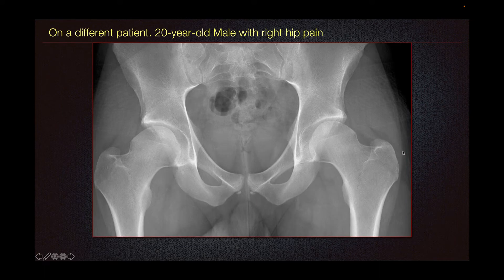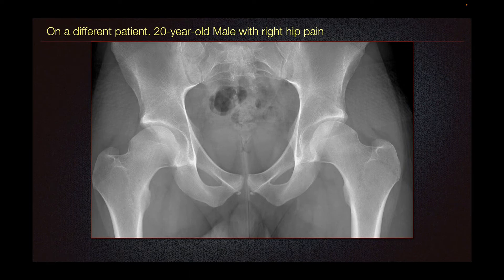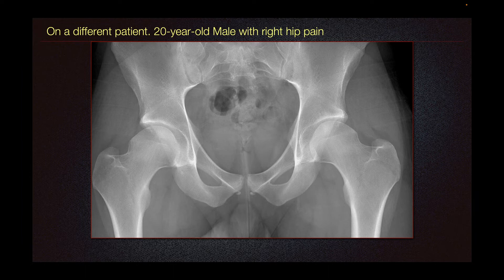In patients with suspected femoroacetabular impingement, radiograph is the imaging modality of choice as it can demonstrate bony abnormality. This 20-year-old male with right hip pain demonstrates bony protuberance in the superior aspect of the right femoral head-neck junction, which is also seen on the contralateral left hip. This finding is typically seen in CAM-type femoroacetabular impingement.